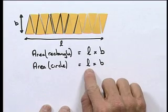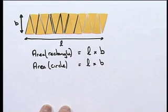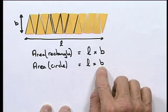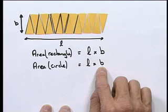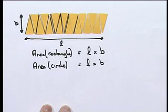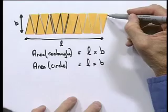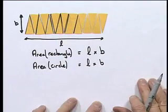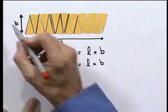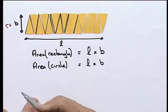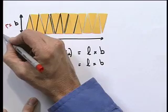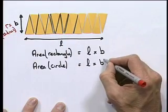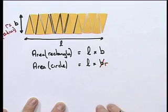But length and breadth aren't really properties of a circle. So we want to replace length and breadth with dimensions that are related to a circle. Now look carefully. This edge of the rectangle is what to the circle? It's the same as the radius of the circle. So I can replace the breadth with the radius.